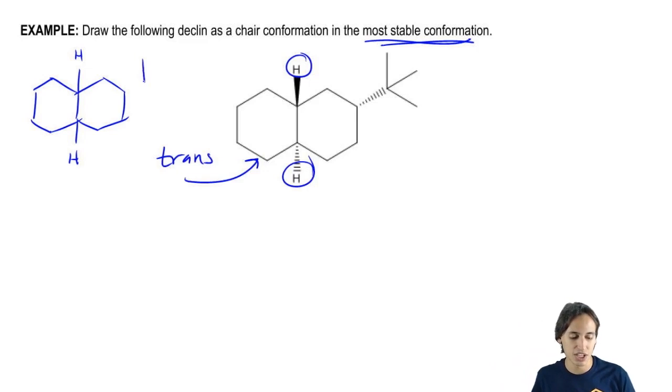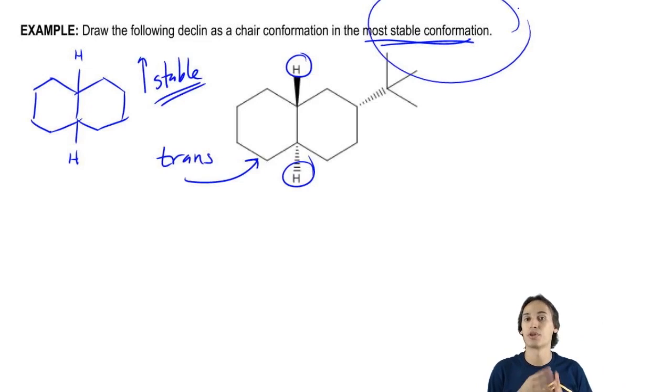Why? Because remember that trans is going to be the most stable as possible, the most stable possible decalin. So if it's asking me for the most stable conformation, then I'm going to draw trans no matter what.